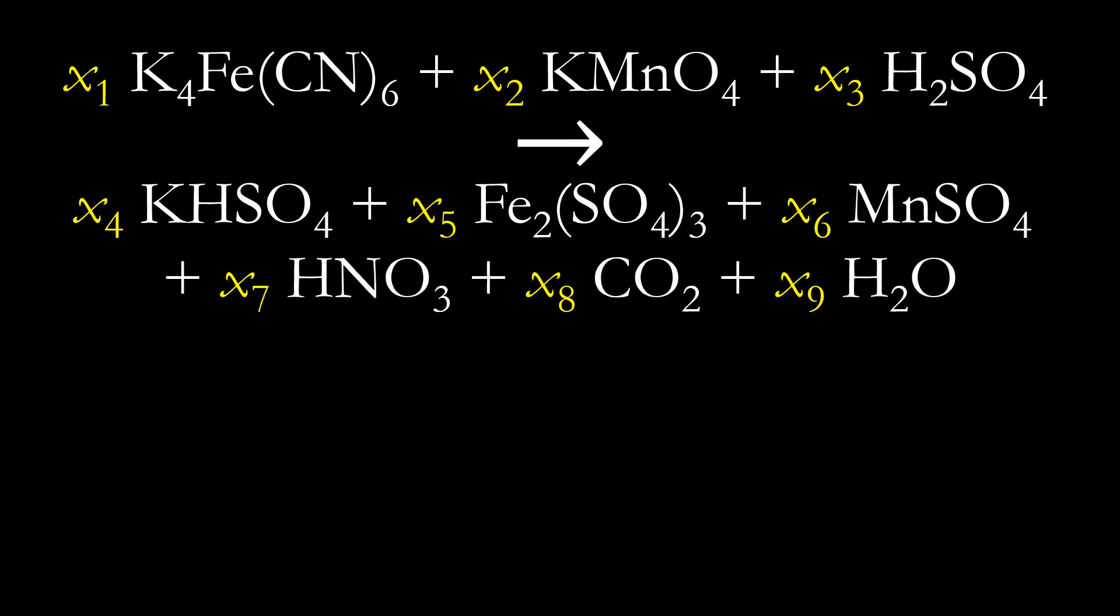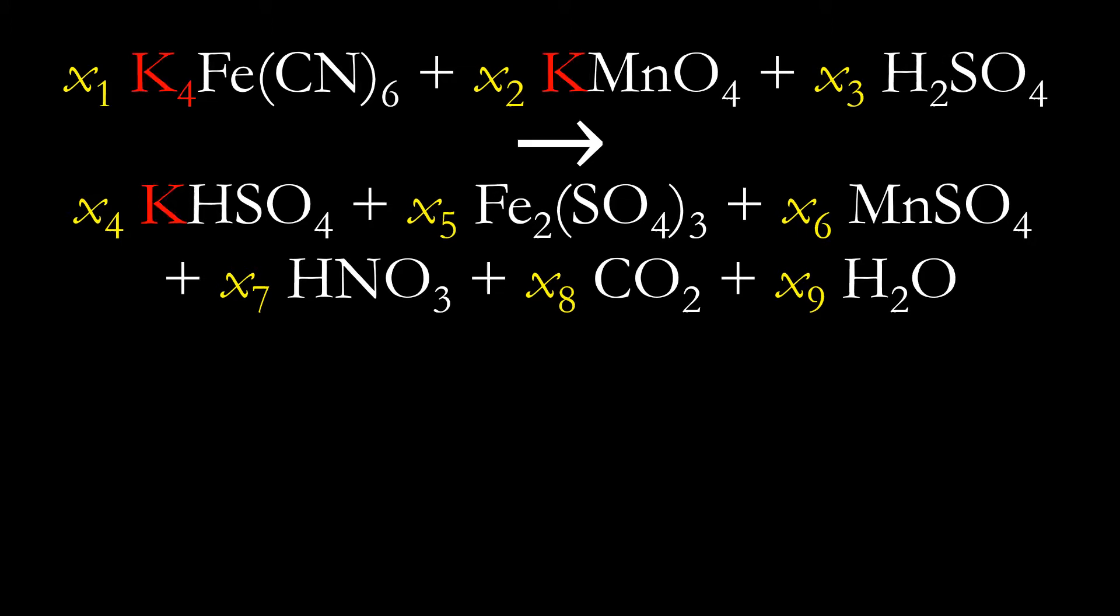While researching how to solve these hard balancing equations, what I found is an algebraic method where all of the coefficients that go in front of the reactants and products, you put a variable there and you write equations. These equations involve the different elements. For example, the first element listed is potassium, the K. It appears in two of the reactants and just one of the products.